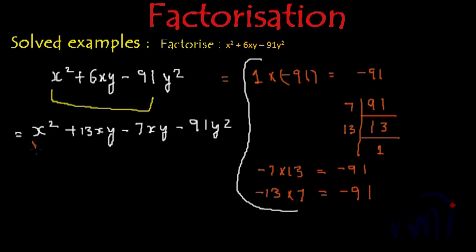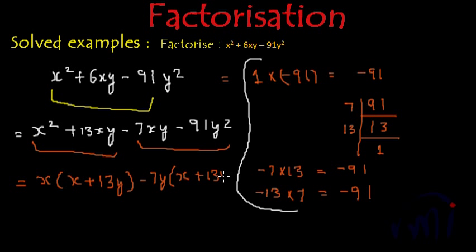So if we pair two two terms, from these two terms, we can take x as common inside the bracket, we will have x plus 13y and from next two terms, we can take minus 7y common and again inside the bracket, we will have x plus 13y.